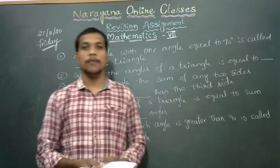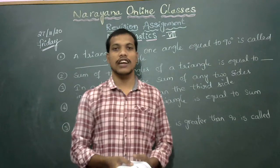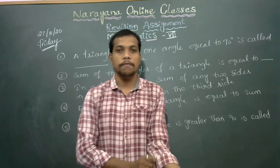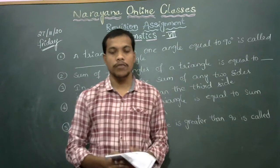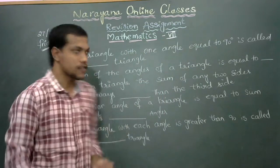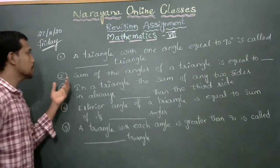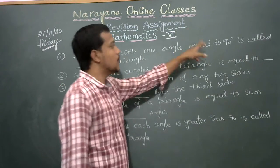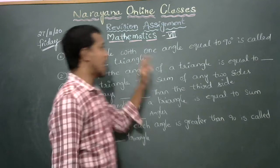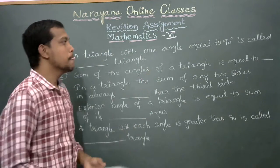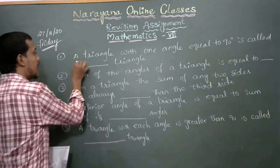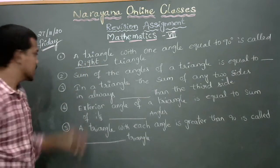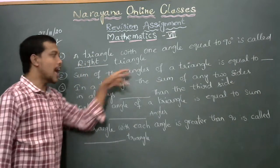Hello students, welcome to our online classes. Today we are discussing 7th class mathematics reasoning assignment dated 27-11-2020, Friday assignment solution. First one: a triangle with one angle equal to 90 degrees is called a right-angled triangle, that is, a right triangle.